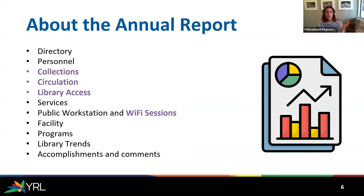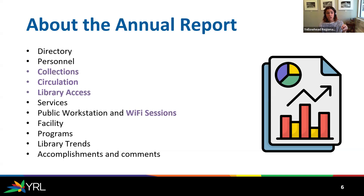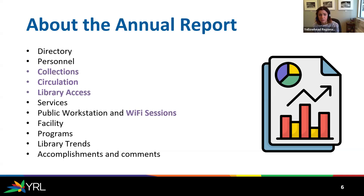When you are in LibPASS, the annual report section is divided into multiple sections. You'll be asked questions about the directory — that's really just updating your contact information, and all previously recorded information will be there. Then there's information about personnel, staff, and volunteers. There was one new change for this year's annual report that only affects higher county libraries, adding an extra question about staff administration helping boards at that level. If you're a standalone location, there's no change.